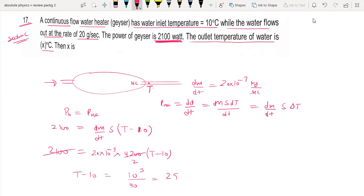And T is equal to 35 degrees. This is the outlet temperature from which the water comes out. So this question is complete. Thanks for watching.